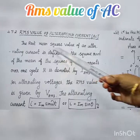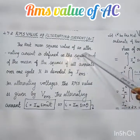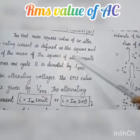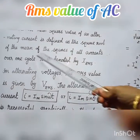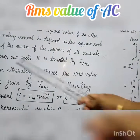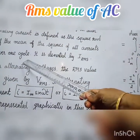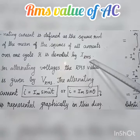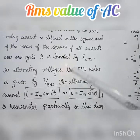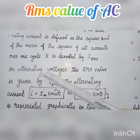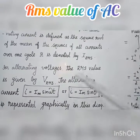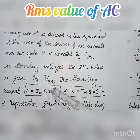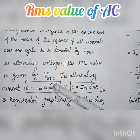The root mean square value of alternating current is defined as the square root of the mean of the square of all the currents over one cycle. It is denoted by I_RMS. For alternating voltage, the RMS value is given by V_RMS, voltage root mean square.